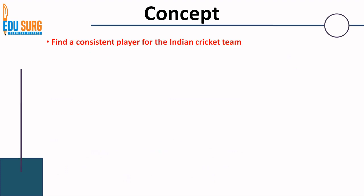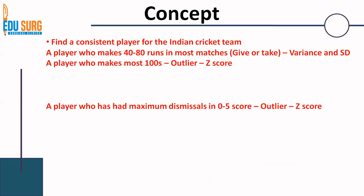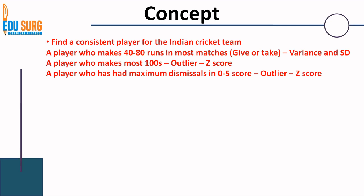Let's look at more examples. A consistent cricket player makes 40 to 80 runs in most IPL matches — it may be 50, 60, or 70, but that range makes them reliable. This value is given by variance and standard deviation. Because we are looking at runs — a unit — it is standard deviation. Now, a player who scores the most hundreds is looking at an extreme value, so you want a Z-score — an outlier. Similarly, a player with maximum dismissals at 0 to 5 scores is performing badly — again an outlier, again a Z-score.